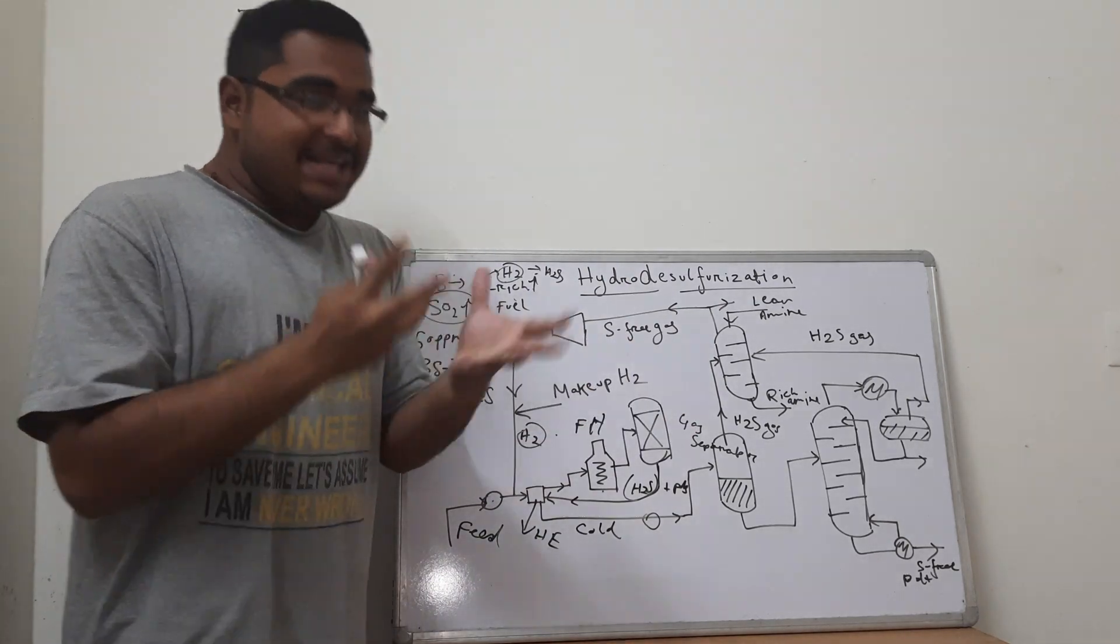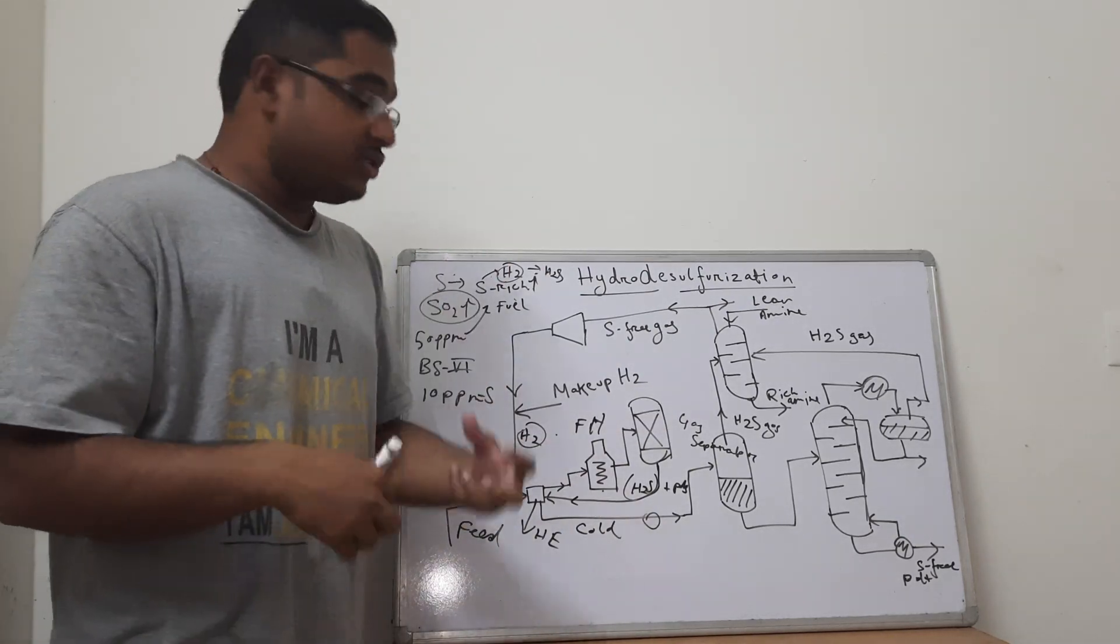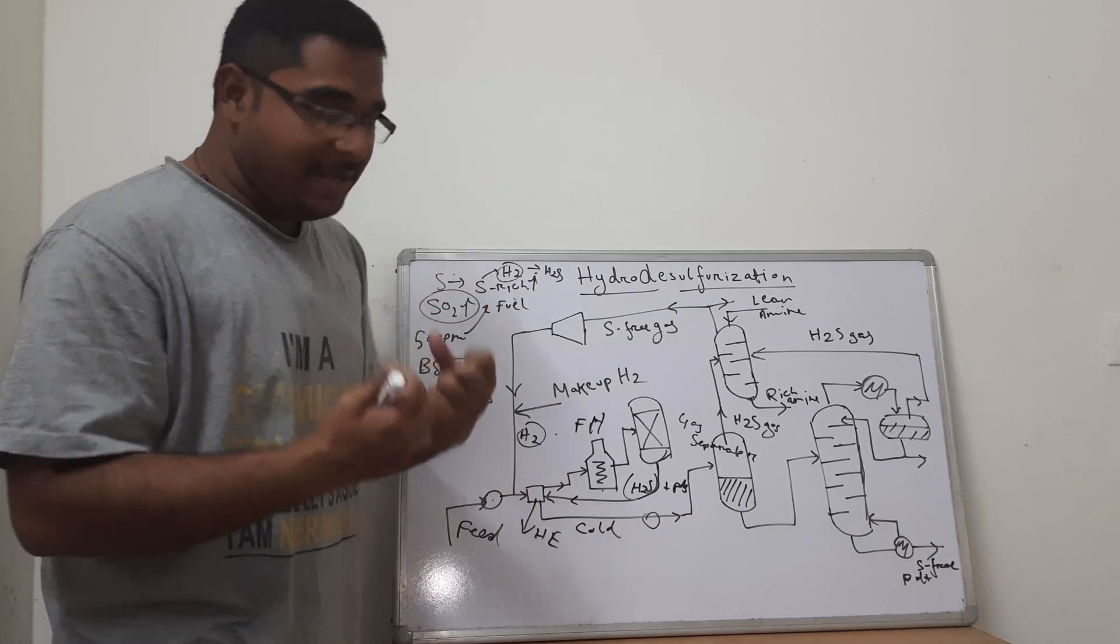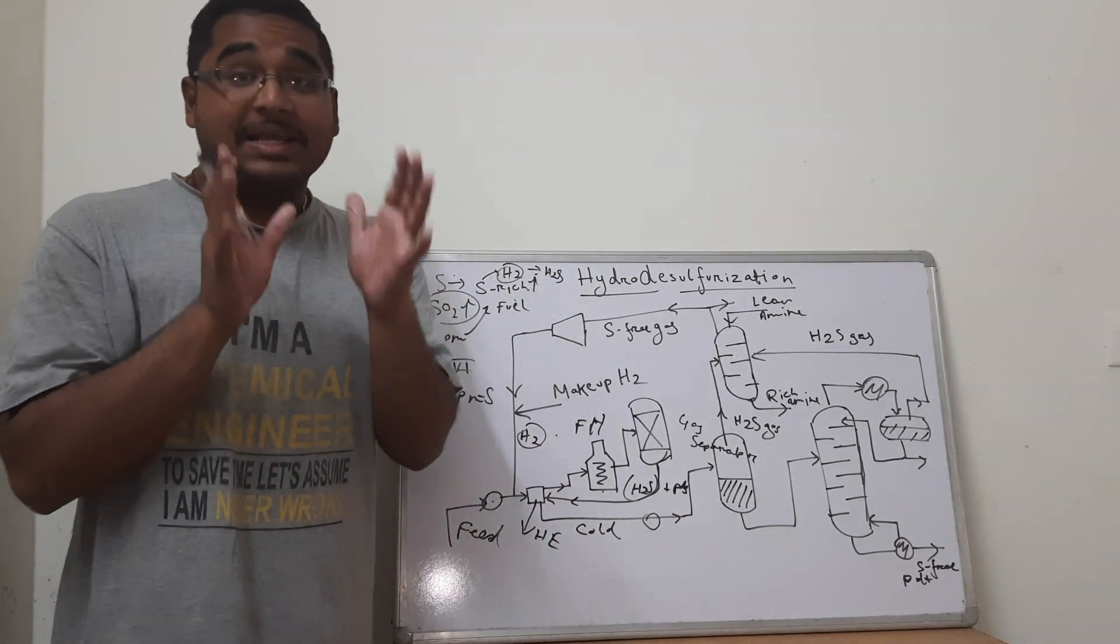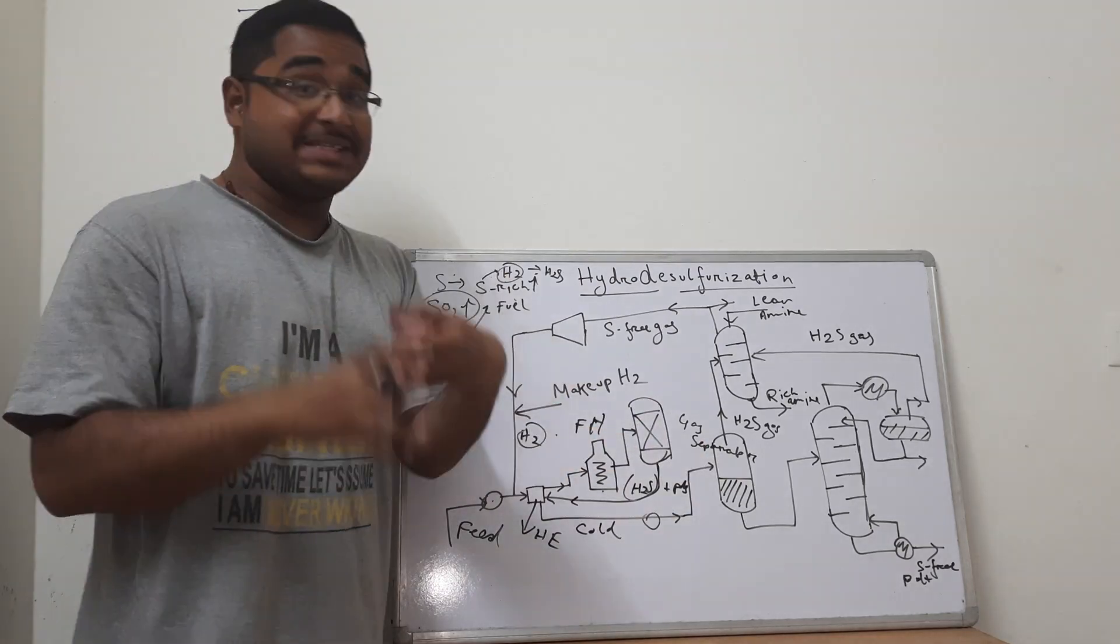When we decrease the temperature or throttle the valve, throttle the stream, the pressure is reduced. And as soon as the pressure is reduced, the boiling point of the mixture decreases. And the gases that are present in the mixture temporarily tend to vaporize or form gases and escape.